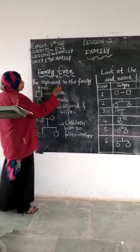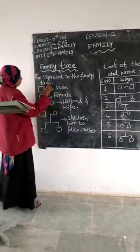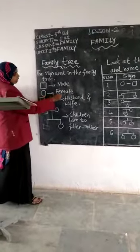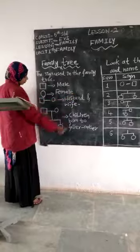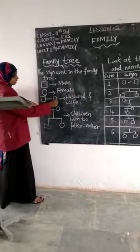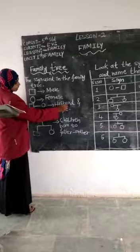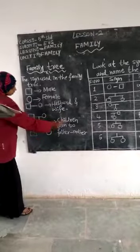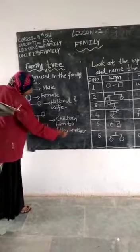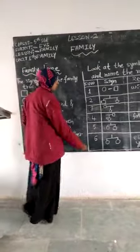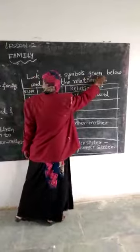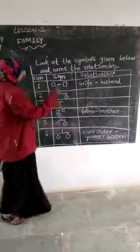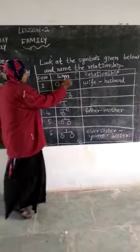The signs used in the family tree: a square indicates men, a circle indicates female. A square and circle together indicate husband and wife. The third generation represents children born to father and mother. Look at the symbols given below and name the relationship. See the number sign and relationship.